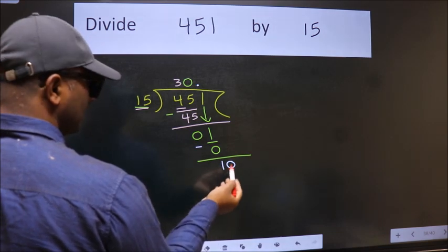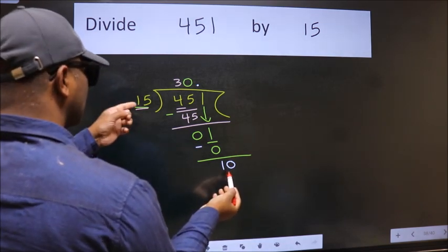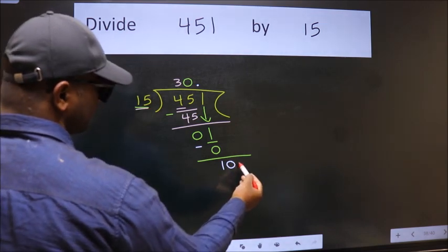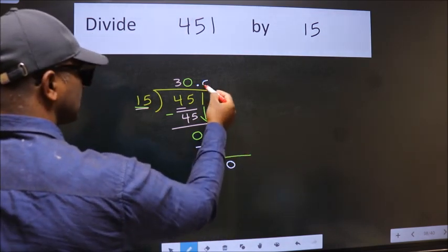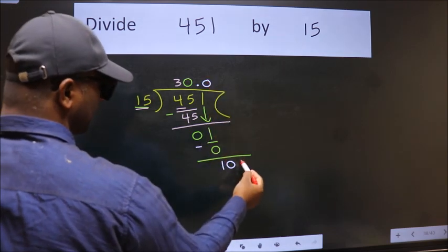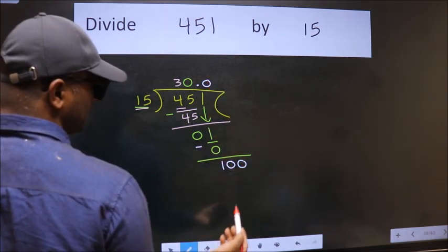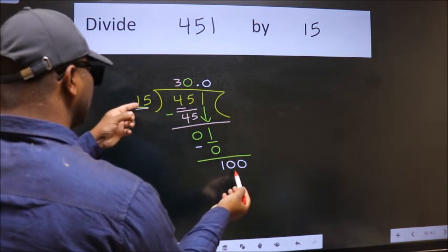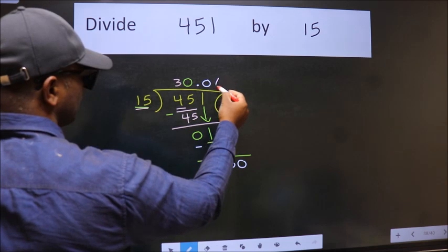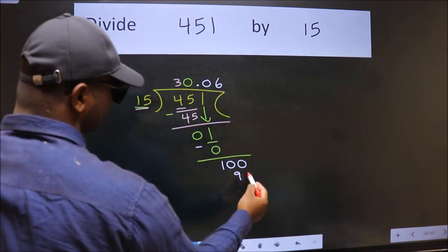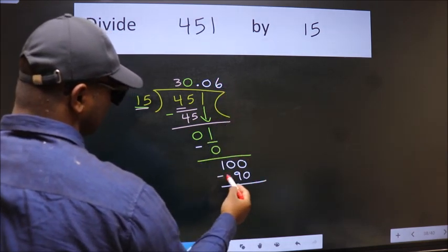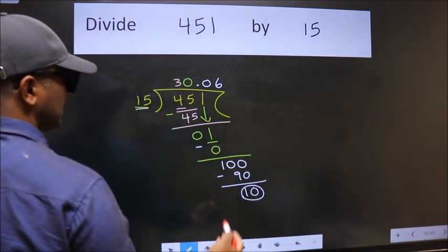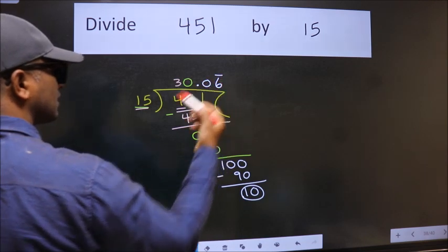So 10. 10 is still smaller than 15. We already have the decimal. So to get 0 here, we should put 0 here to get another 0 here. So 100. A number close to 100 in 15 table is 15, 6, 90. Now we subtract. We got 10 again. That means we get bar on this number.